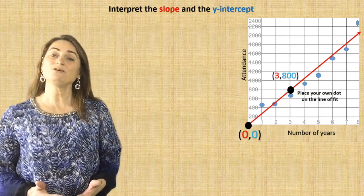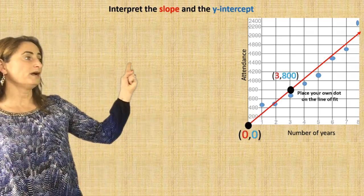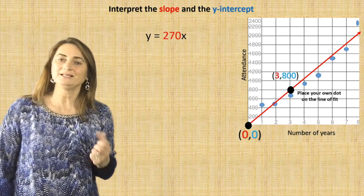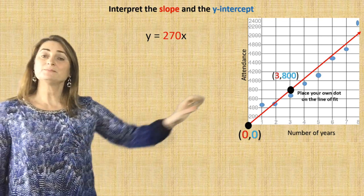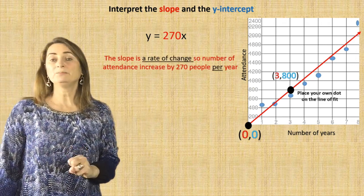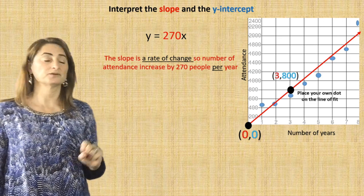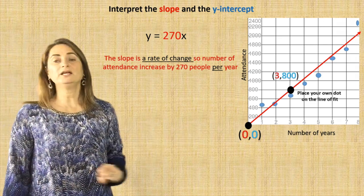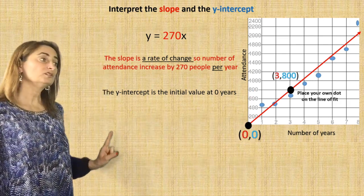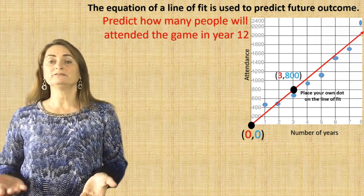Now we need to interpret the slope and the y-intercept in the context of the problem. The equation is y equals 270x. The slope is 270 — since it's a positive slope, that means the number of attendees increased by 270 people per one year. That's the rate of change. The y-intercept is the initial value at 0 years — the line crosses the y-axis at 0, so 0 people attended the game before the 8 years began.